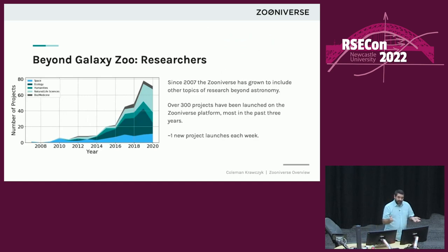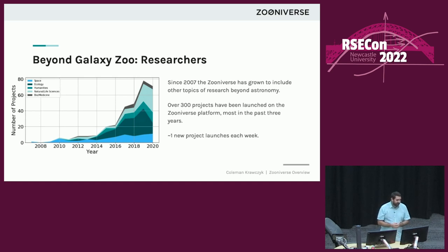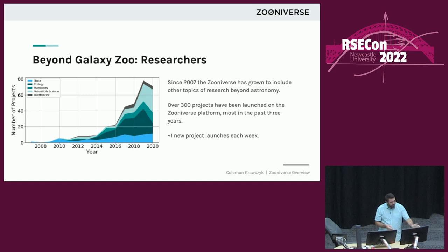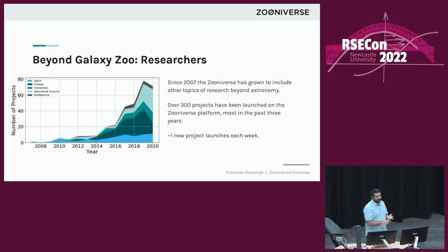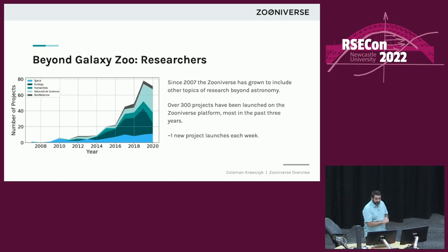Galaxy Zoo and the Zooniverse has grown beyond just the space sciences. Here's a chart showing the number of projects that have launched in various fields over time. It started with one project back in 2007, but since then the number has grown significantly. There have been over 300 projects covering space sciences, ecology, humanities, natural life sciences, biology and medicine, and many others. At the moment we're launching approximately one new project every single week on the platform.